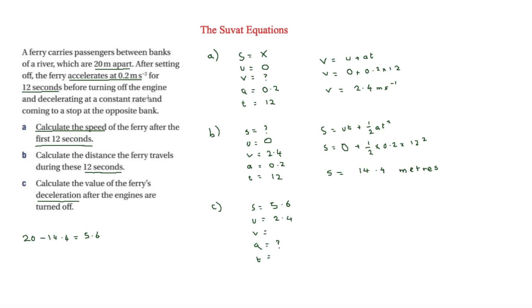V is 0 because the ferry comes to a complete stop at the opposite bank. T is not needed and not given, so we use the equation that excludes T: V squared equals U squared plus 2AS. Substituting: 0 equals 2.4 squared plus 2 times 5.6 times A, which gives 0 equals 5.76 plus 11.2A.